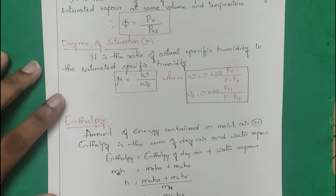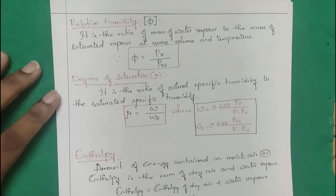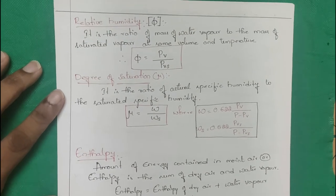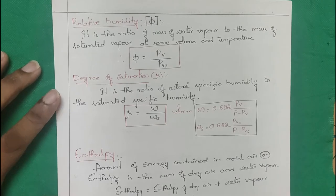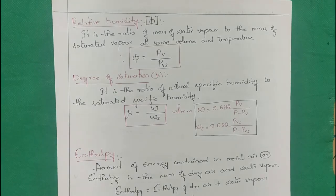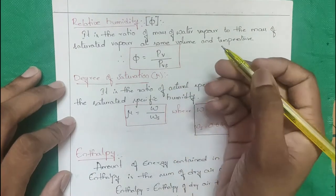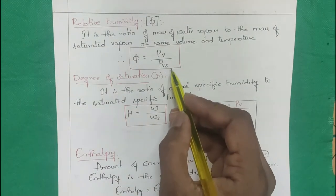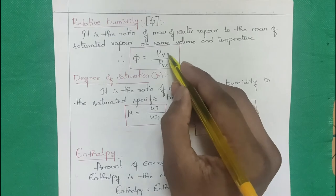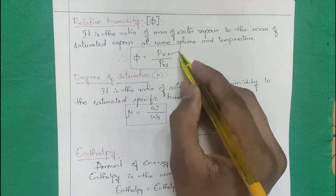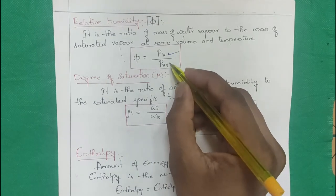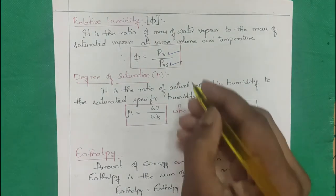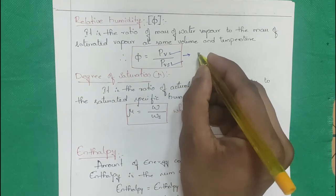Relative humidity is always expressed as a percentage. It is the ratio of mass of water vapor to mass of saturated vapor at the same volume and temperature, which simplifies to pv / pvs × 100%, where pv is the partial pressure of water vapor and pvs is the saturated vapor pressure.